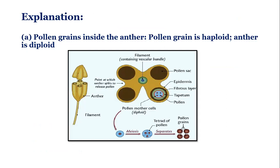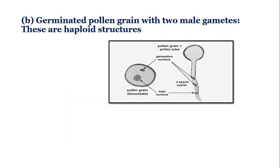So here the anther is diploid and the pollen is haploid, so they belong to two different generations, and one is present within the other.